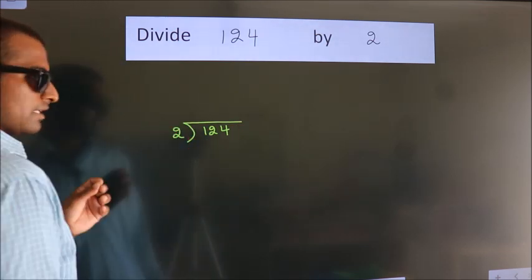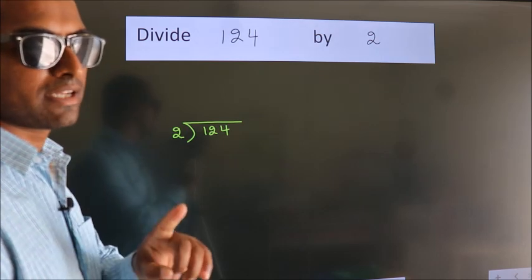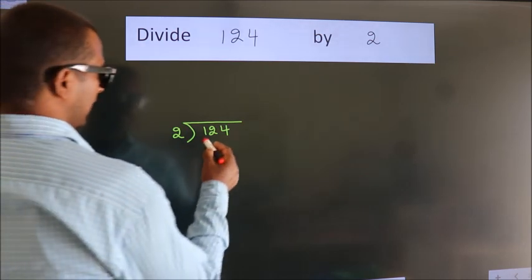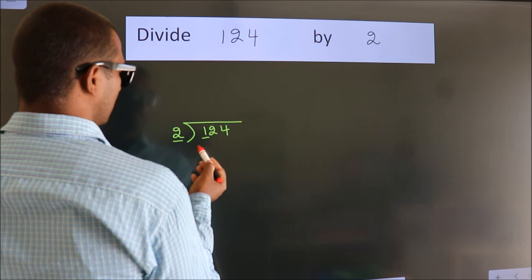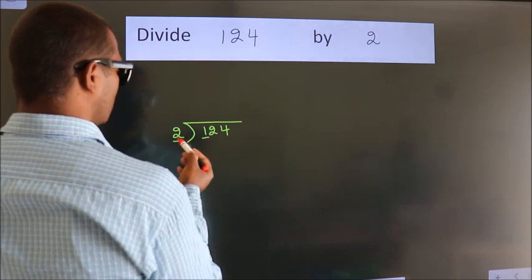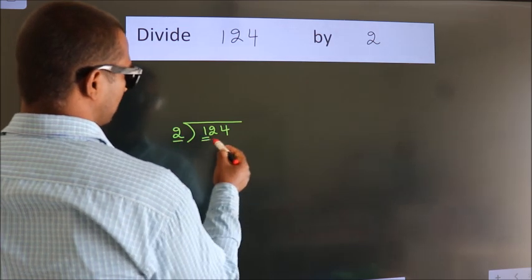This is your step 1. Next, here we have 1, here 2. 1 is smaller than 2. So we should take 2 numbers, 12.